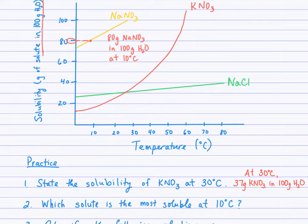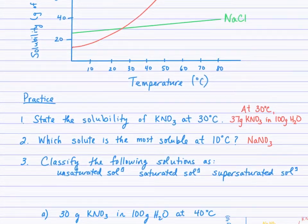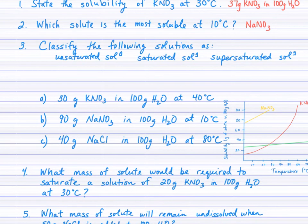Question two: which solute is the most soluble at 10 degrees Celsius? At 10 degrees Celsius, the red curve is pretty low, then green, and yellow is definitely highest at 80 grams. NaNO₃ was the yellow curve, so sodium nitrate is the most soluble at 10 degrees Celsius. Next, question three introduces the second term in our title: saturation. I'm asking you to classify solutions as either unsaturated, saturated, or supersaturated.